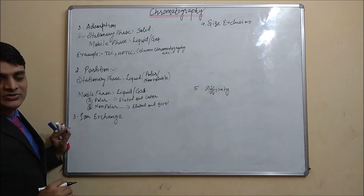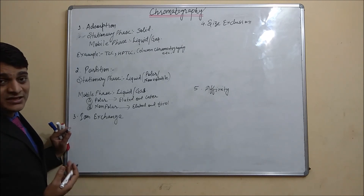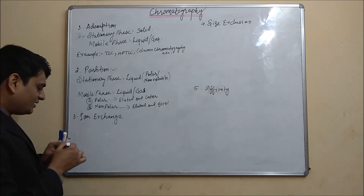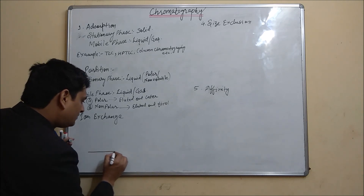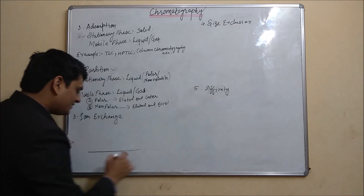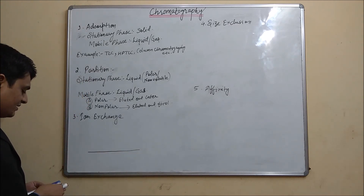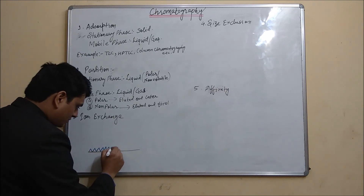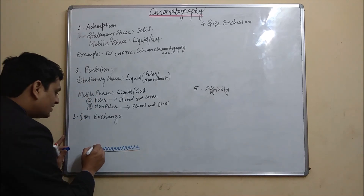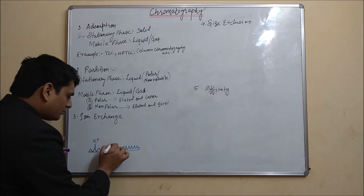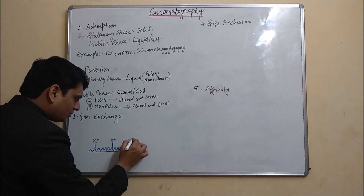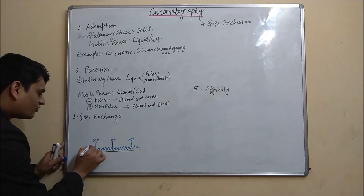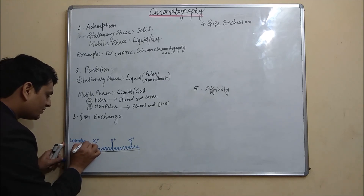Now coming to the third principle, ion exchange chromatography. As its name suggests, an ion exchanger resin is present, and exchange of ions takes place. In the stationary phase, there is a matrix — made up of dextran or cellulose — and some ions are attached to it by covalent bonds.